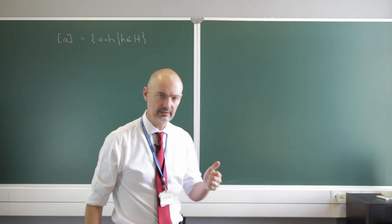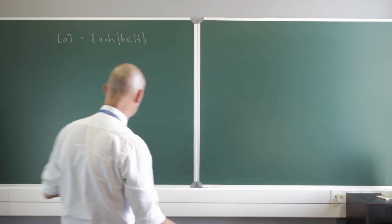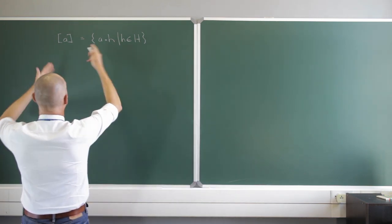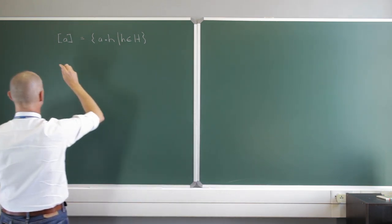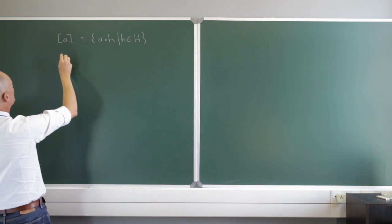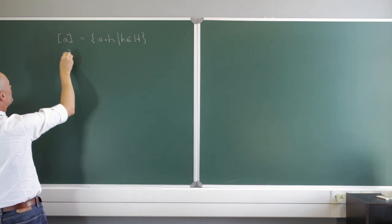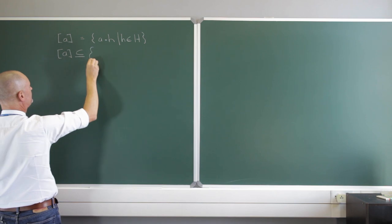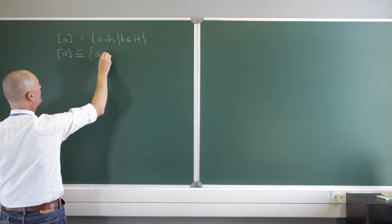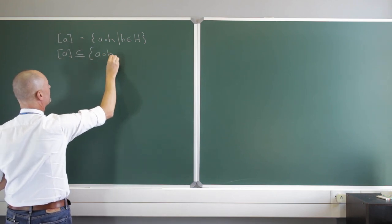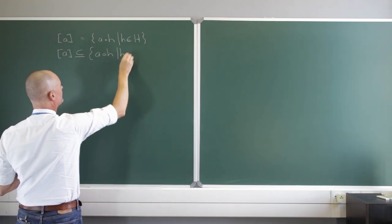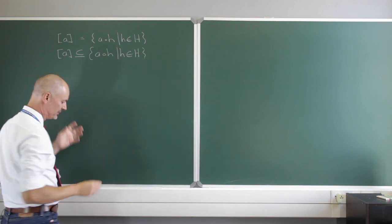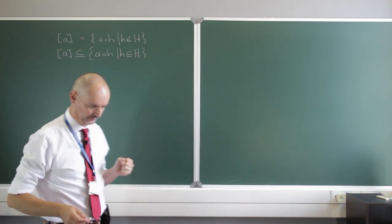To show that two sets are equivalent, I have to show that each is a subset of the other. So in our proof, first let's show that the equivalence class is indeed a subset of {AH : H is an element of my subgroup}.